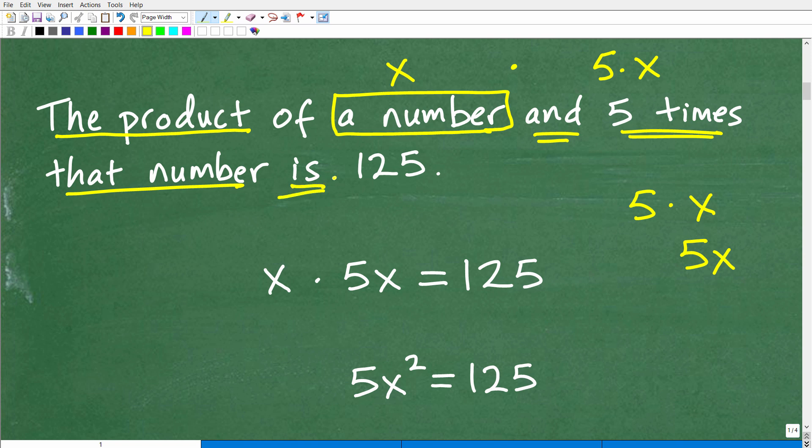Is. Now, is. When you see is in a phrase, a verbal phrase, it's always the equal sign. Okay? So it's is or equal to 125. Okay?